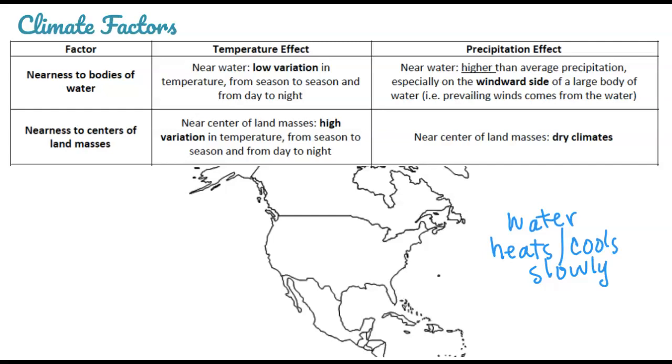Whereas in the center of a landmass, no water nearby, surrounded all by land, and land heats and cools quickly. So what happens is you get more extreme temperatures in the middle of a landmass. Day to night, it can really change, get very hot during the day and then cool off quickly at night, or seasonally you get super hot summers and super cold winters, and that is the characteristic of temperature changes in the middle of the landmass.